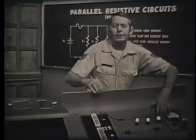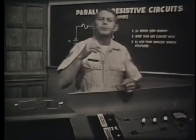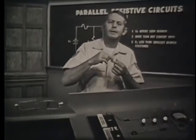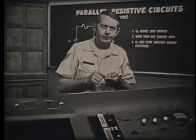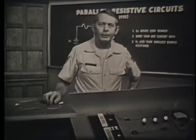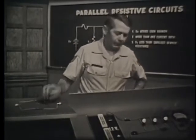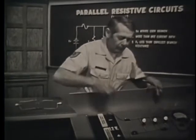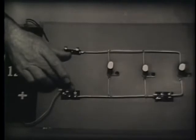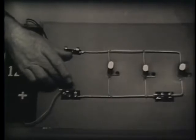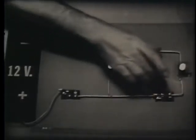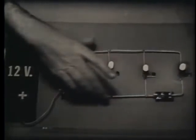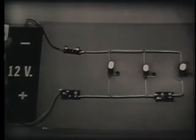The parallel circuit has more than one path for current. But what about the voltage? Notice on this trainer that each branch is connected directly across the battery.